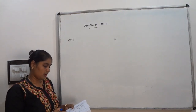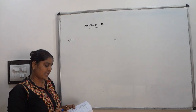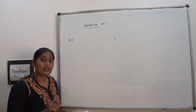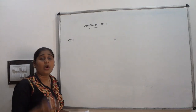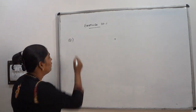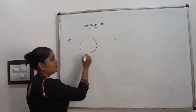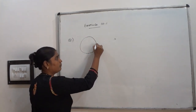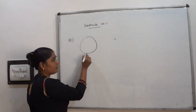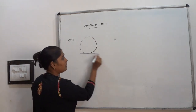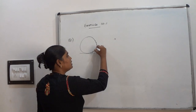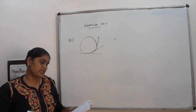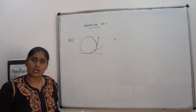Question number 1: How many tangents can a circle have? On the circle there are infinite points, and from each point I can draw a tangent. Therefore, infinite tangents we can draw for a circle.